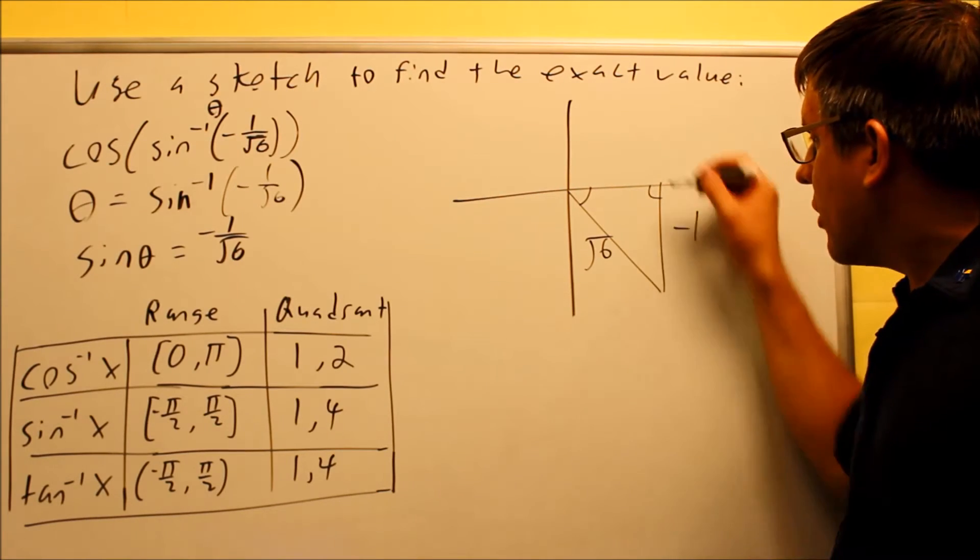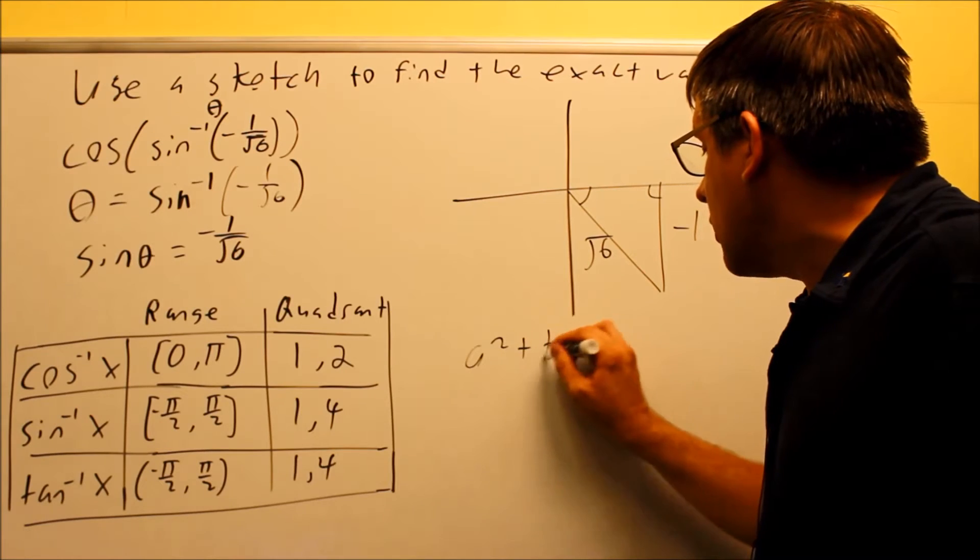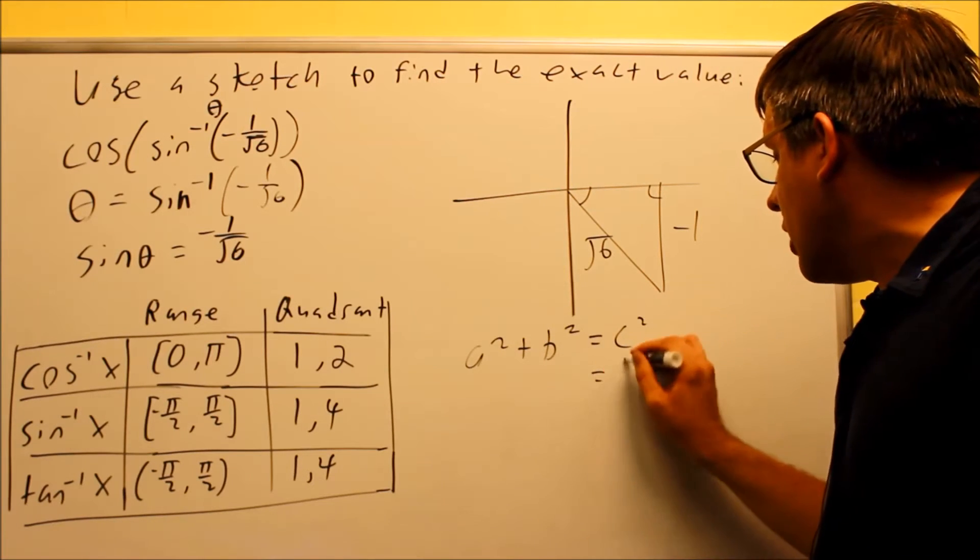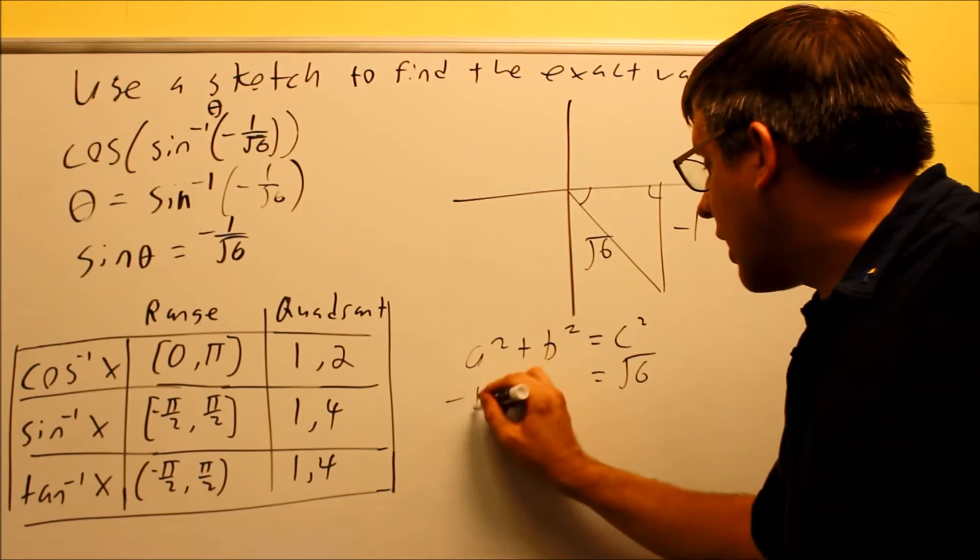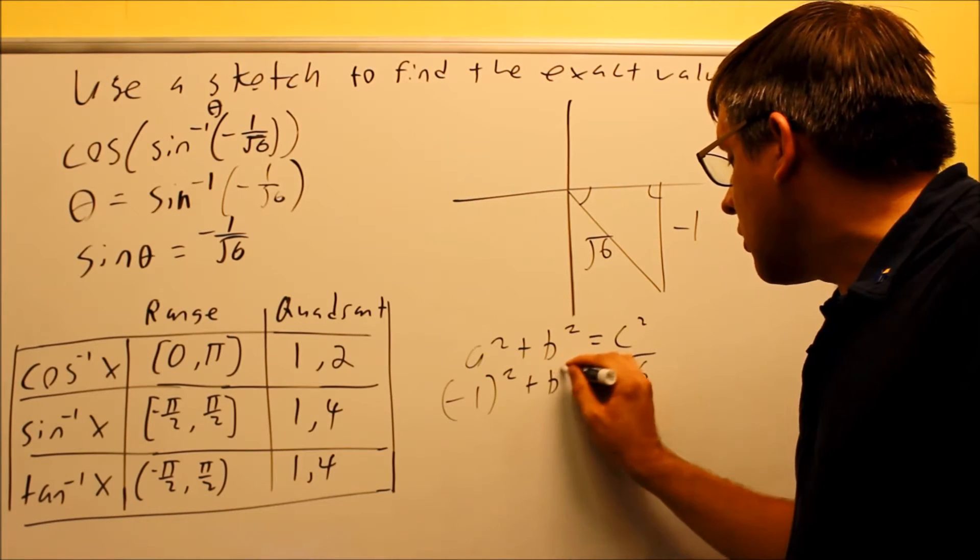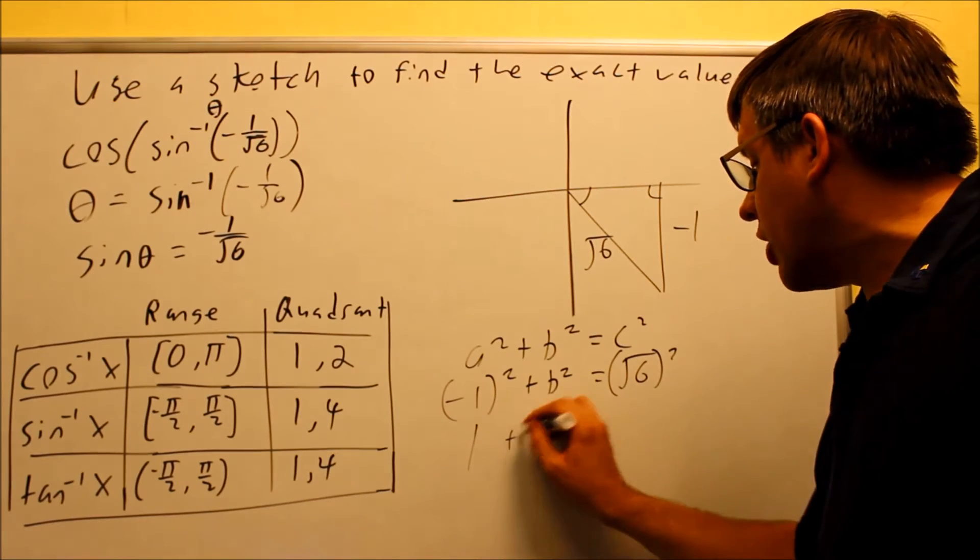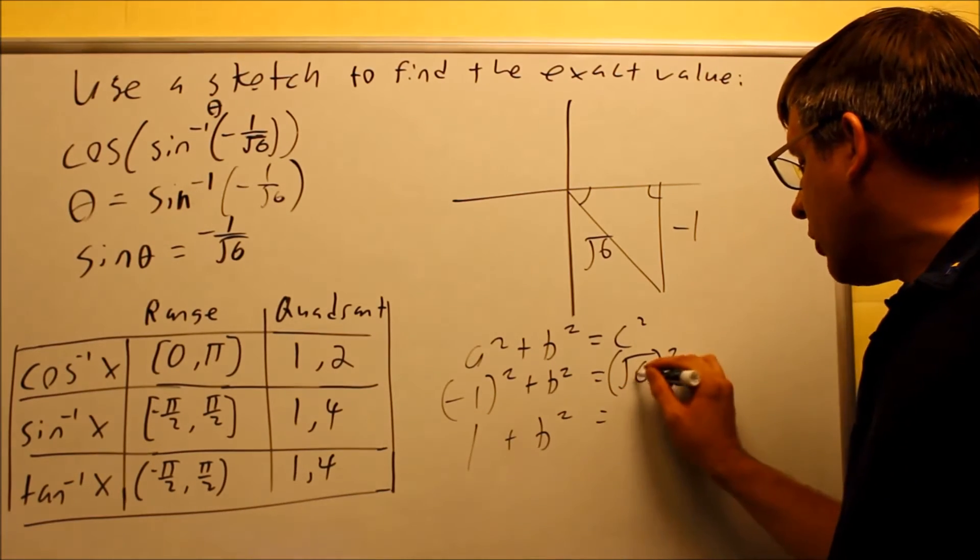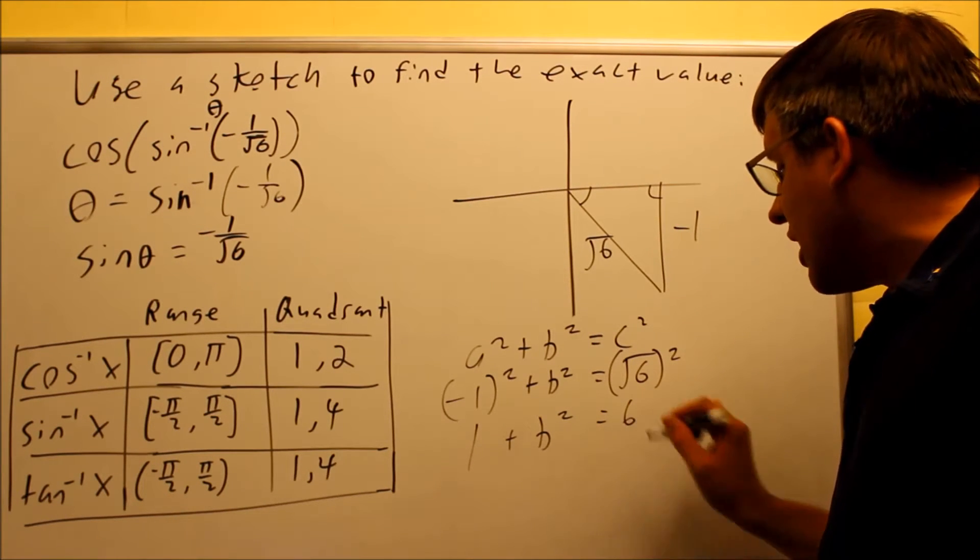I need to use Pythagorean theorem to figure out the last side. So when I do that, your c value is the square root of 6, that's the side opposite the right angle. And I also have negative 1 given as well. And so when I put all this in here, I get positive 1. And then when I square this, the square root is going to disappear, and so I get 6.